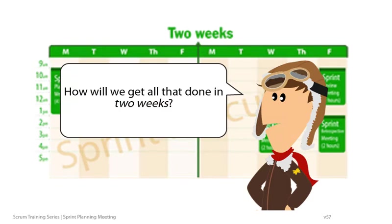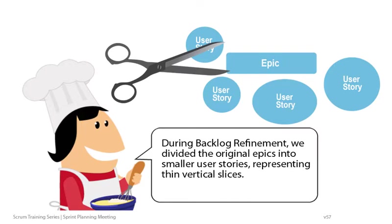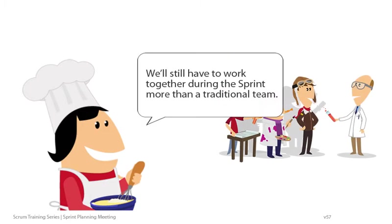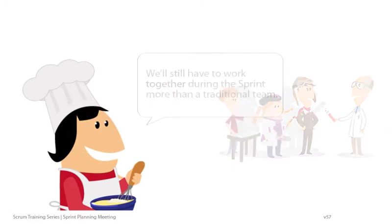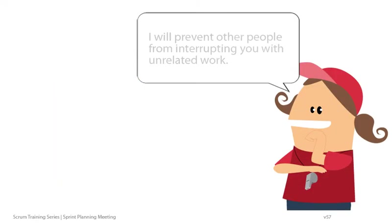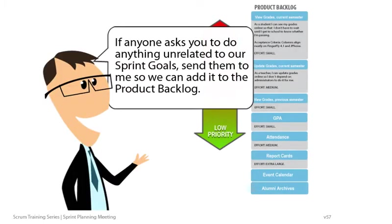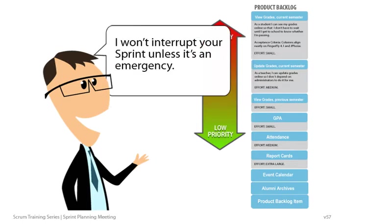How will we get all of that done in two weeks? During backlog refinement, we divided the original epics into smaller user stories, representing thin, vertical slices. We'll still have to work together during the Sprint more than a traditional team. That's why we got you a team room. I will prevent other people from interrupting you with unrelated work. If anyone asks you to do anything unrelated to our Sprint goals, send them to me so we can add it to the Product Backlog. I won't interrupt your Sprint unless it's an emergency.